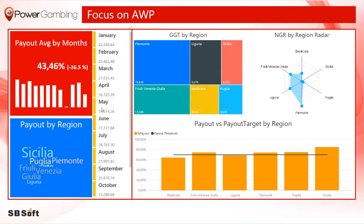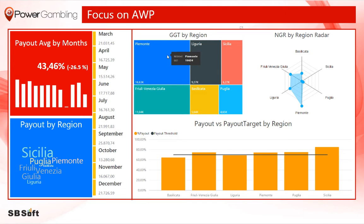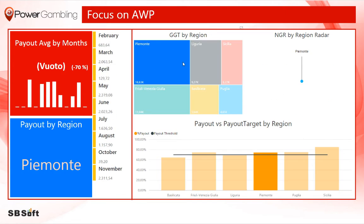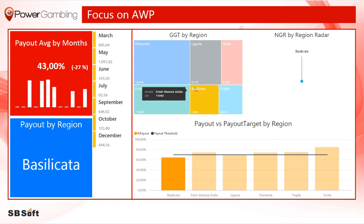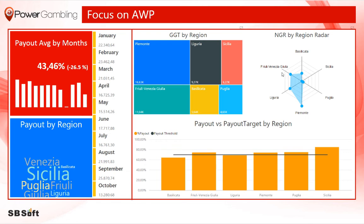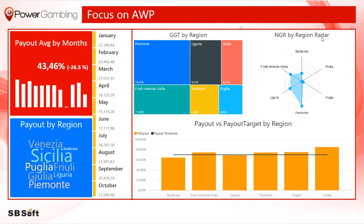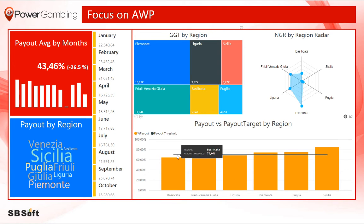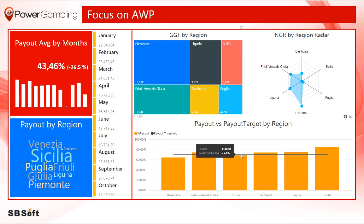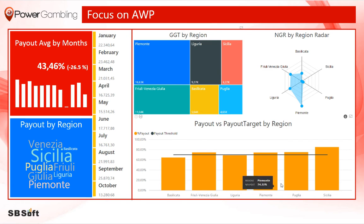There is a list of payout values by month, and an area chart where it is possible to analyze the gross gaming total values by region. You can monitor the net gaming revenues by region with a radar chart, and compare all regions payout — represented with bars — and the payout threshold represented by the line.